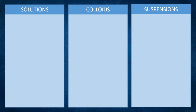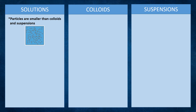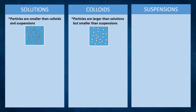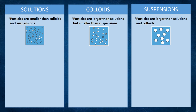Let us differentiate solutions, colloids, and suspensions from each other, beginning with their particle size. The particles of solutions are the smallest among these mixtures, represented by small circles inside a box. The particles of colloids are larger than solutions but smaller than suspensions — they are intermediate. The particles of suspensions are the largest among these mixtures.